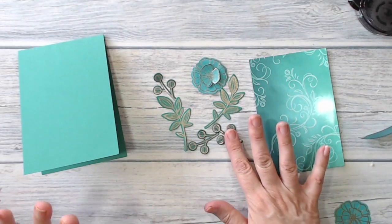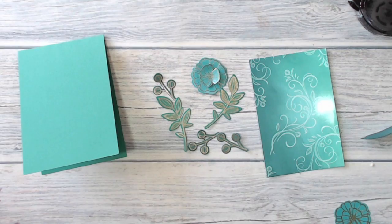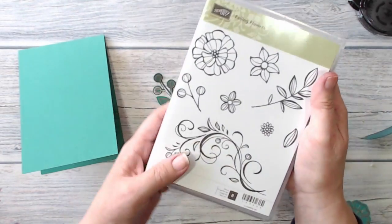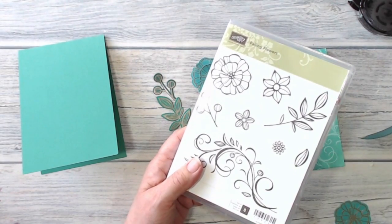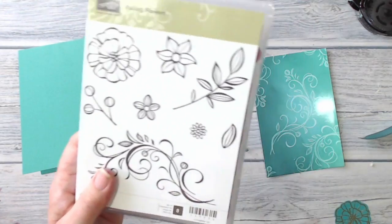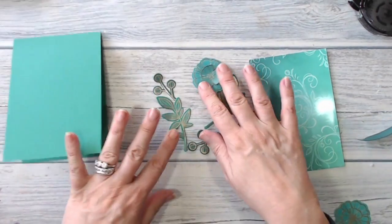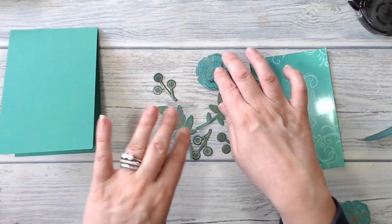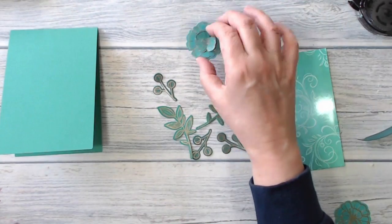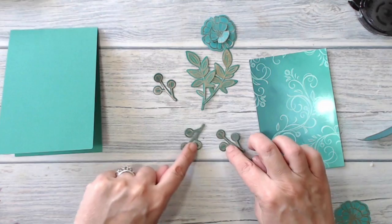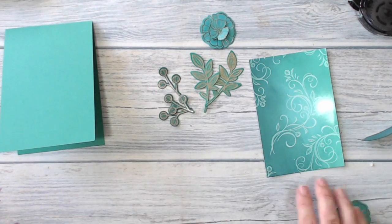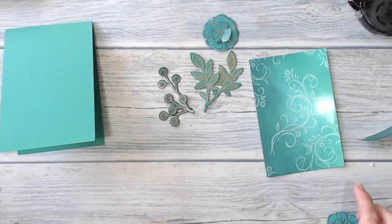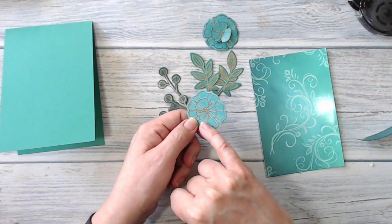I've done some stamping and die cutting off camera. I'm just going to talk you through what I've done. I stamped out that flower a couple of times, a few of those leaves and a few of those seed pods, and I embossed them in my gold and silver mix. The flowers I did on Bermuda Bay, this is on Emerald Envy, and I did these on tranquil tide. I cut two of those and I just fussy cut out that middle part of it there.